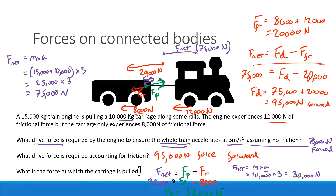So the pull force is 38,000 newtons — that's how much the engine is pulling the carriage forward. And because of action-reaction, if the engine is pulling the carriage forwards with 38,000 newtons, then the carriage is pulling the engine backwards with 38,000 newtons. You can use that information to figure out all the forces acting on the engine itself.